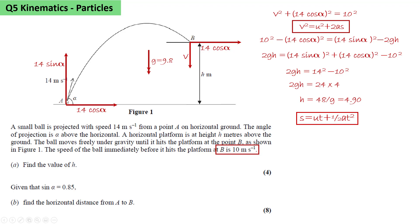We're asked to find the horizontal distance from A to B. To do that, we need to know the time that it will be traveling. So again, we consider the vertical motion and use S equals UT plus a half AT squared from the SUVAT formulas.